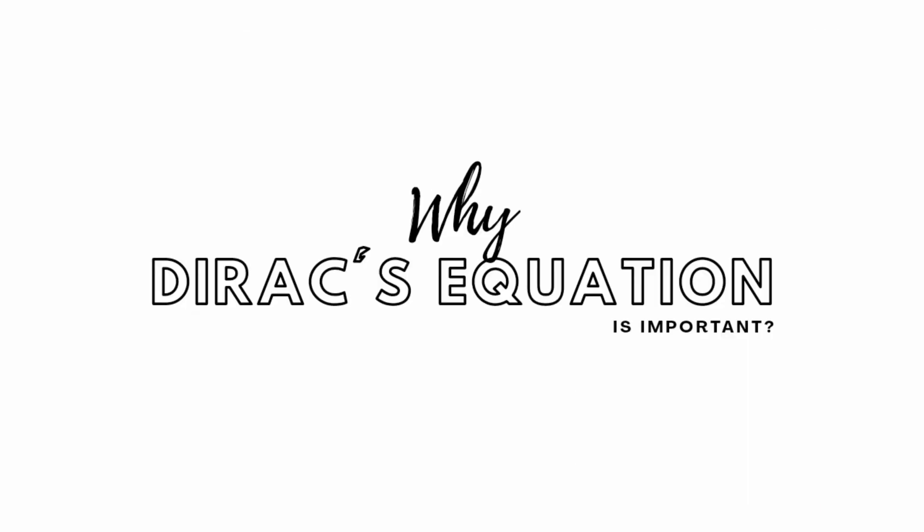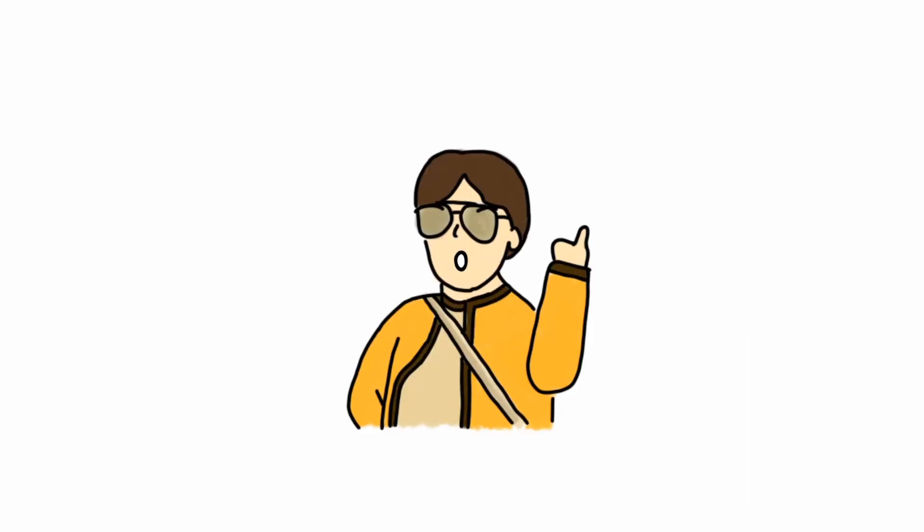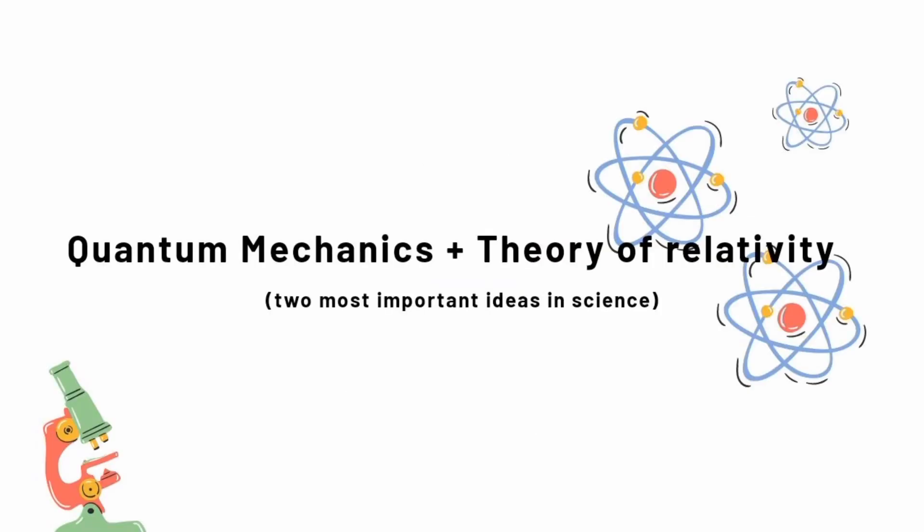Why is the Dirac equation important? It brought together two of the most important ideas in science: quantum mechanics, which describes the behavior of tiny objects, and Einstein's special theory of relativity, which describes the behavior of fast-moving objects. As a result, Dirac's equation describes how particles like electrons behave when they travel close to the speed of light.